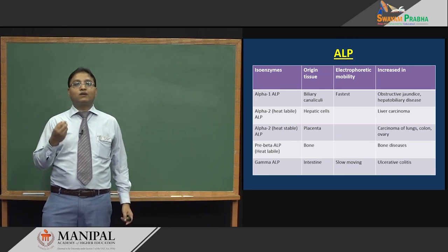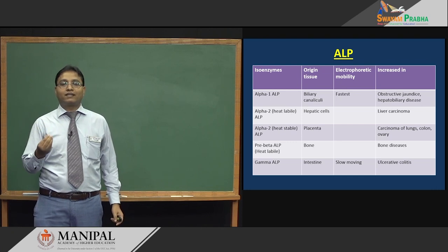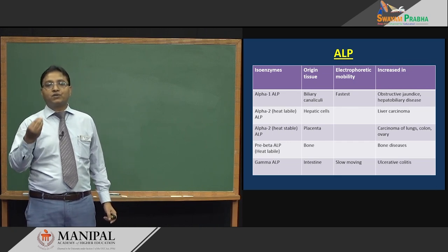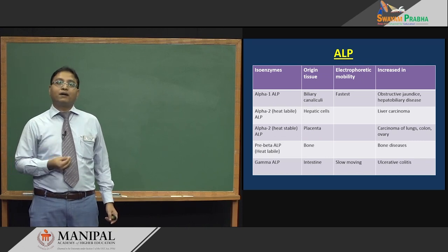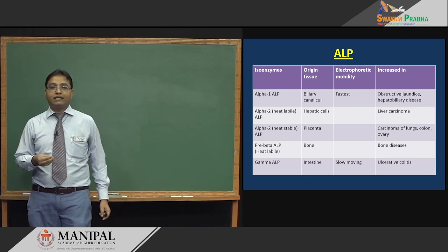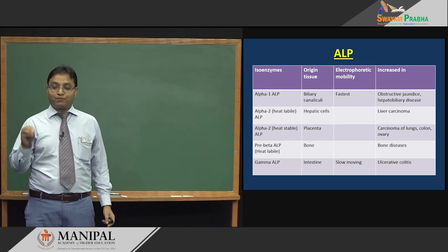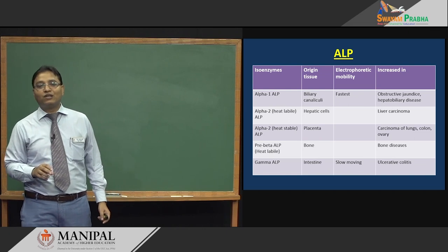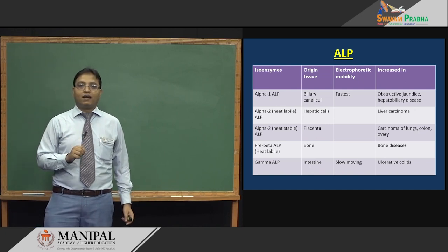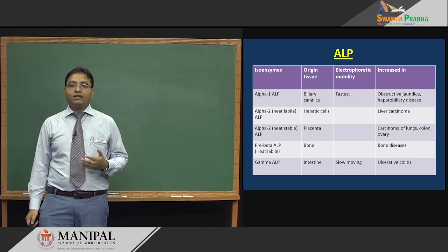The second is alpha-2 heat-labile ALP, present in hepatic cells — labile means it is destroyed by heat. Increased alpha-2 heat-labile ALP is seen in liver cancer. There is also alpha-2 heat-stable ALP, which is not destroyed by the same heat and is present in the placenta. Alpha-2 heat-stable ALP is increased in carcinoma of the lung, colon, and ovary.